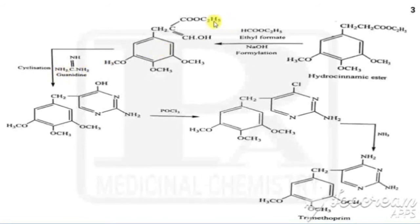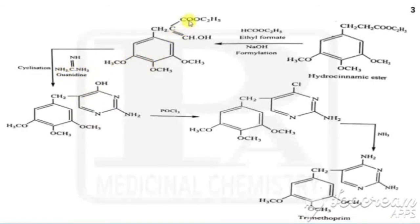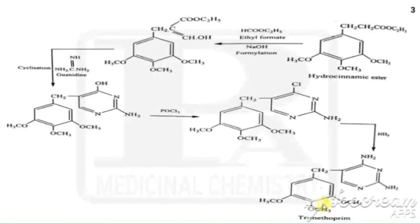One nitrogen from guanidine combines with C2H5O and is removed as C2H5OH, leaving NH. That NH hydrogen adds with oxygen to form OH, which together with the adjacent carbon and nitrogen closes to form the pyrimidine ring. The pyrimidine formed has a hydroxy group and an amino group. On chlorination with POCl3 the hydroxy group is replaced by chlorine, then on amination with ammonia the chlorine is replaced by NH2, giving trimethoprim. That is the synthesis of trimethoprim.